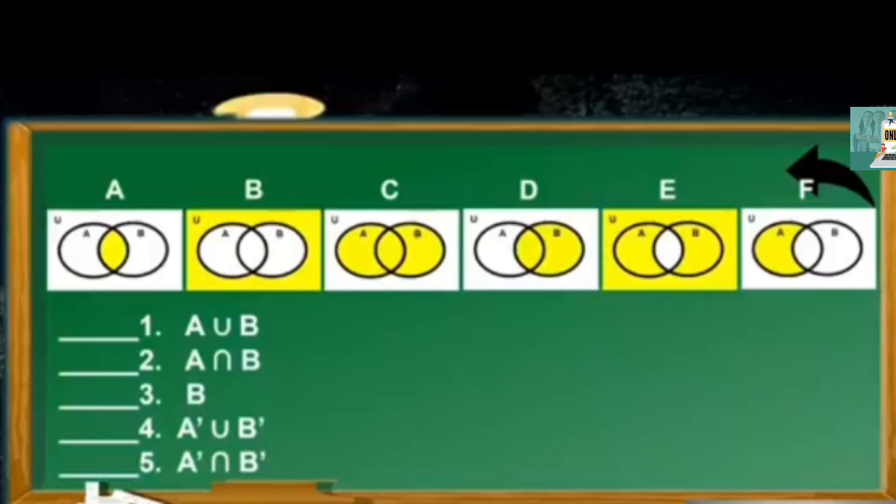Number 1: A union B. Number 2: A intersect B. Number 3: B only. Number 4: The union of the complement of A and the complement of B. Number 5: The intersection of the complement of A and the complement of B.